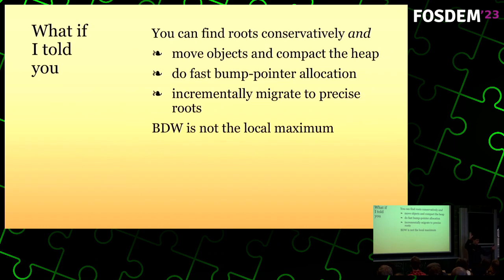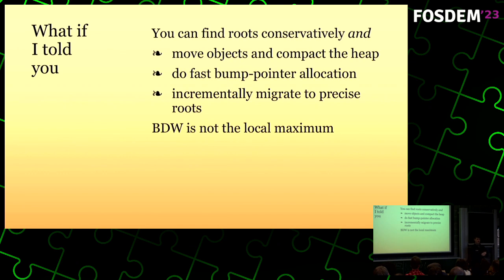But there is actually a better way. We thought we were at a local maximum — we couldn't get better without getting worse for a while, like having to descend into the valley to reach the mountaintop. But it turns out that you can have conservative roots and still move objects and compact the heap. You can have conservative roots and do fast bump pointer allocation. And you can have conservative roots and eventually add more precision to your scan.